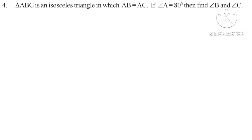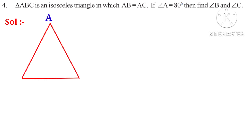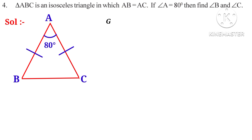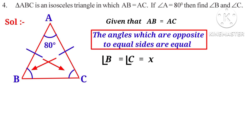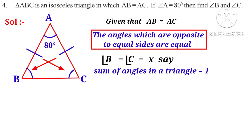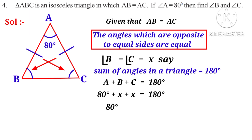Fourth problem: triangle ABC is an isosceles triangle in which AB is equal to AC. If angle A is equal to 80 degrees, then find angle B and angle C. Solution: since AB is equal to AC, the angles opposite to equal sides are equal, so angle B is equal to angle C. Let that be X. We know that the sum of angles in a triangle is 180 degrees, so A plus B plus C equals 180 degrees. A is 80 degrees and B and C are both X, so 80 plus X plus X equals 180 degrees, giving 80 plus 2X equals 180 degrees.